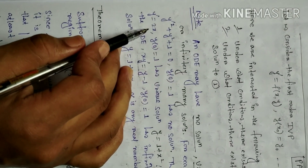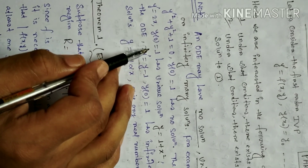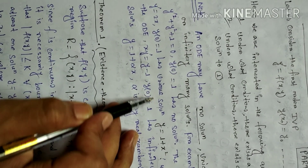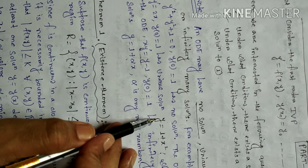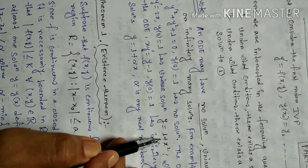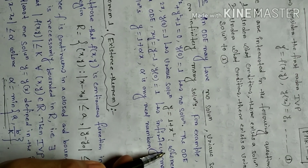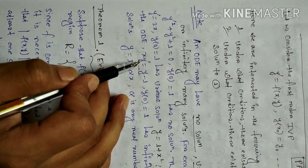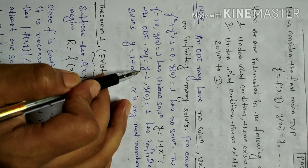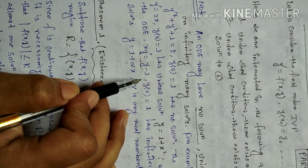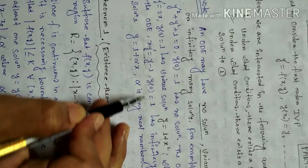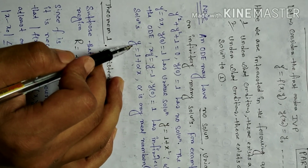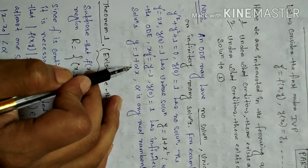The ODE y' = x with y(0) = 1 has a unique solution, that is y = 1 + x². Whereas the ODE x·y' = y − 1 under boundary condition y(0) = 1 has infinitely many solutions, that is y = 1 + αx.